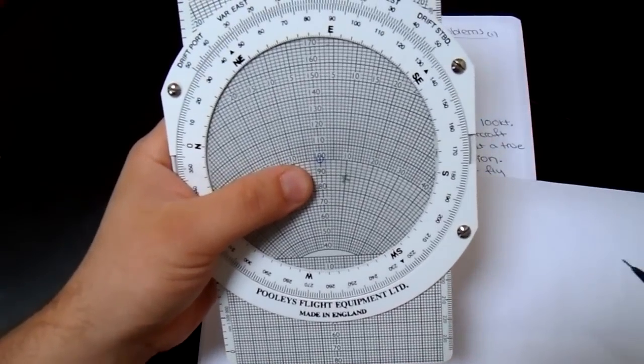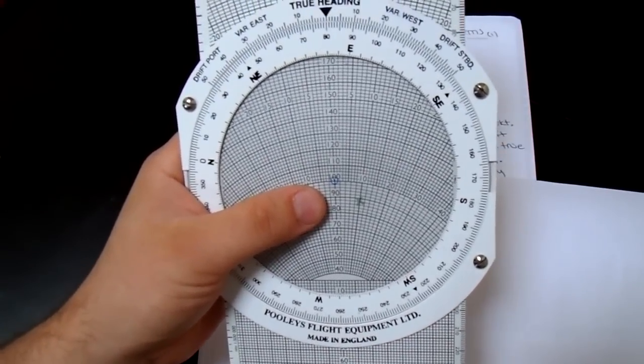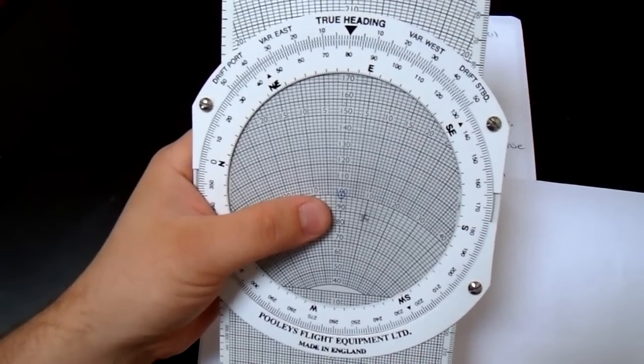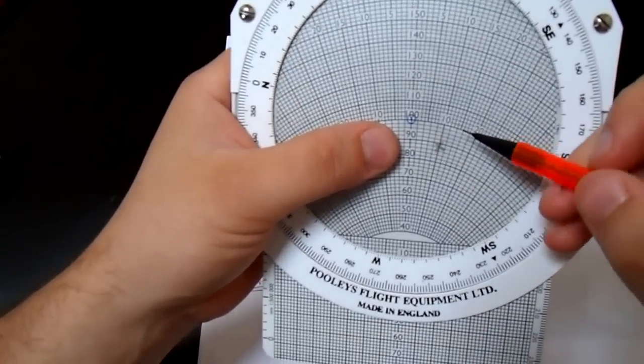So in this case, we know that the heading we have to turn in order to have a true track of 090 is 080 degrees.